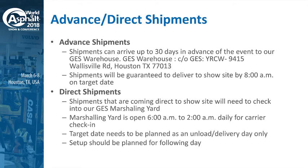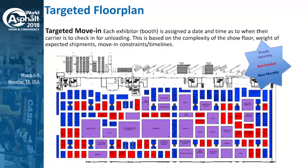On the day of show close, we will have extended hours — open on March 8th from 10 a.m. to 7 p.m. Target date needs to be planned as an unload and delivery date only — do not schedule labor for these days. We can't guarantee what time you will be offloaded, so please do not schedule a labor call for 8 a.m. on any direct shipments. Setup should be planned for the following day. The targeted floor plan is located in the exhibitor service manual — the third item in the table of contents — where you can find your exact target date.